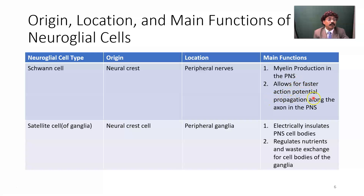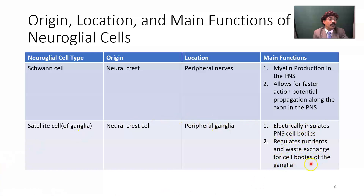Schwann cells allow for fast action potential propagation along PNS axons. Satellite cells of ganglia originate from neural crest cells and are located in peripheral ganglia such as the dorsal root ganglia. Their main function is to electrically insulate peripheral nervous system cell bodies and regulate nutrient and waste exchange for cell bodies of the ganglia.